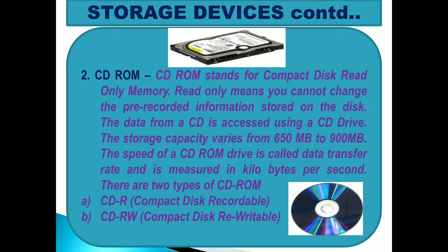Another common storage device is CD-ROM, which stands for Compact Disk Read Only Memory. Read only means you cannot change the pre-recorded information stored on the disk. The data from a CD is accessed using a CD drive. The storage capacity varies from 650 MB to 900 MB. The speed of a CD drive is called the data transfer rate, measured in kilobytes per second. There are two types: CD-R (Compact Disk Recordable) and CD-RW (Compact Disk Rewritable).